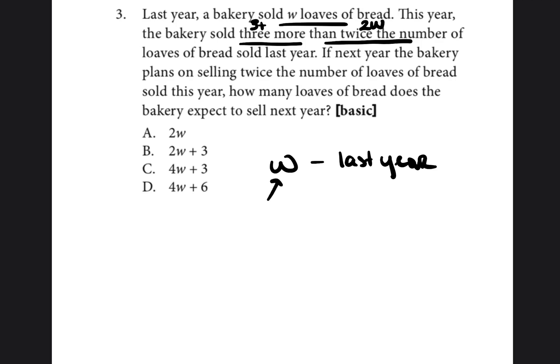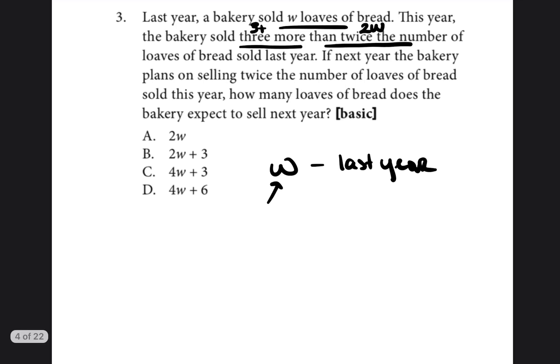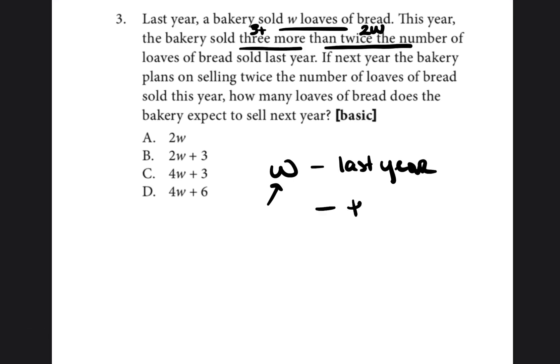Two times whatever value last year was — so this year would be 2W, twice what they sold last year, plus three more.